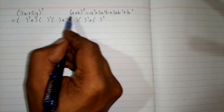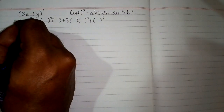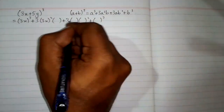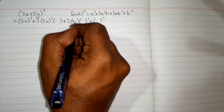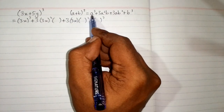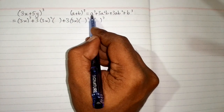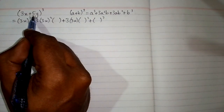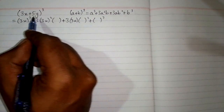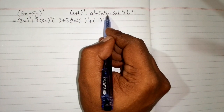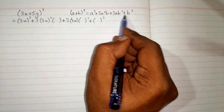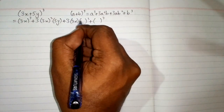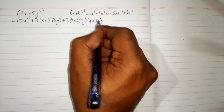Now the value of a is 3x, so we will write 3x in each place of a in this formula. Then the value of b is 5y, so we will put 5y in each place of b.